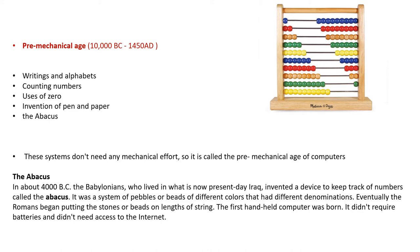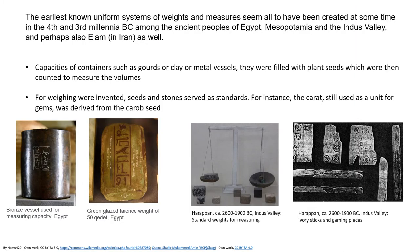Later the Abacus traveled to China and other parts of the world, and people learned to carry out multiplication and division as well. It is believed to be one of the very first information processors to store numbers temporarily and perform calculations, and it continued to be an important tool throughout the Middle Ages.